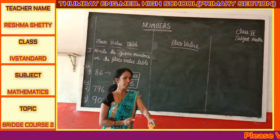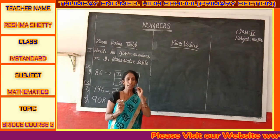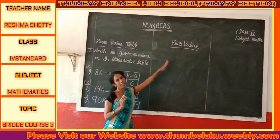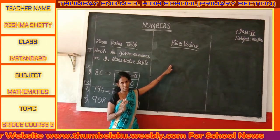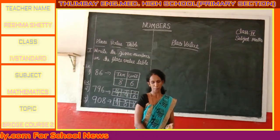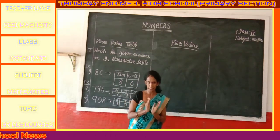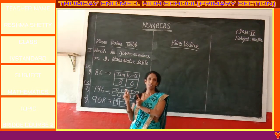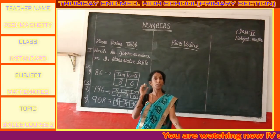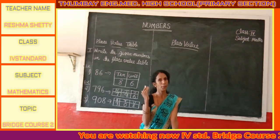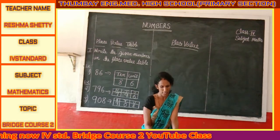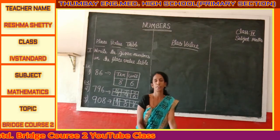This is about how to write given numbers in the place value table according to their place. Next, we will learn to find the place value of each digit in the given number. Place value is the value of each digit according to its place or position in the number. Let's learn this concept with an example.